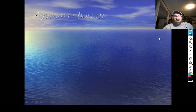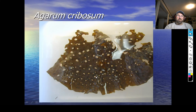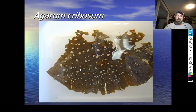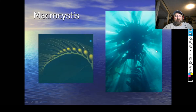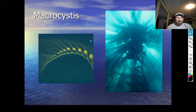Agarum cribrosum is a pretty neat algae — scientists aren't really sure why it has all these holes. It's not because it's rotten; they think the holes increase water flow so that gases can be exchanged better, which is an interesting hypothesis. This one is really cool — California kelp, Macrocystis. It's some of the fastest-growing algae, growing up about a foot an hour.